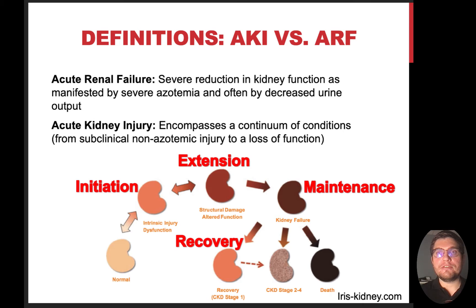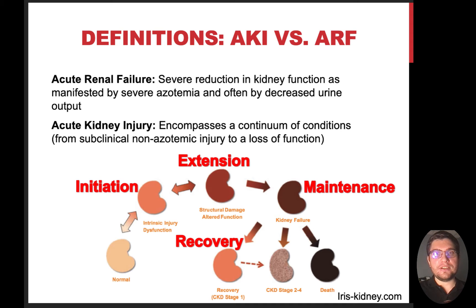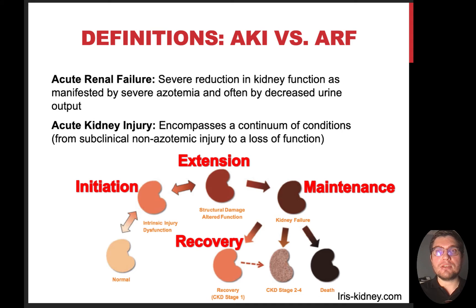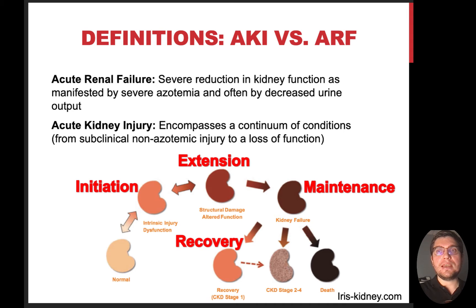Probably a lot of you are familiar with the term acute renal failure as opposed to acute kidney injury. So what is the difference and why did we transition to new terminology? Acute renal failure denotes a severe reduction in renal function as manifested by severe azotemia, decreased urine output, and other important renal functions. Whereas acute kidney injury encompasses a continuum of conditions from subclinical asymptomatic kidney injury to a complete loss of function.